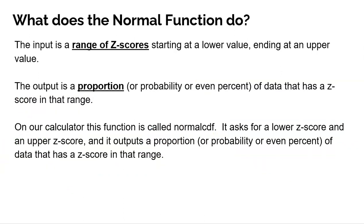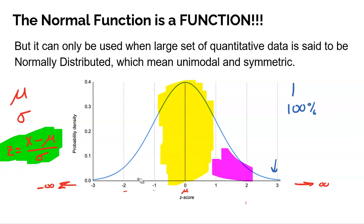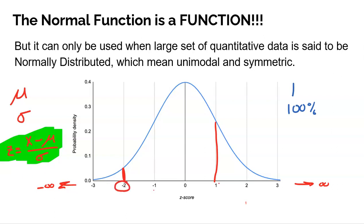Functions have inputs and outputs — go back to your days in Algebra 1. In a normal function, the input is a range of z-scores starting at a lower value and ending at an upper value. The output is a proportion, probability, or percent of data that has a z-score in that range. For example, if the input is a z-score range of negative two to one, the output is the proportion of data falling in that range.